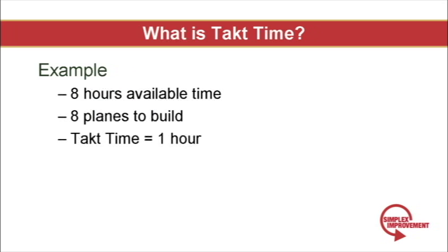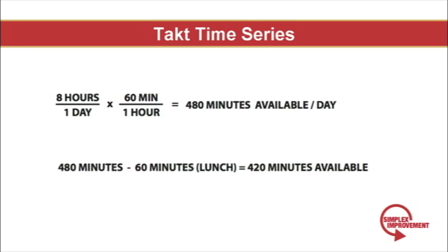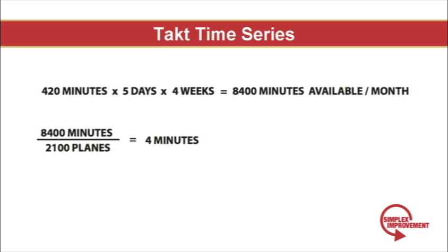Here's another example. We get a massive order of 2,100 planes and the customer says he needs them by next month. To make this easy, I'm going to convert 1 month into minutes. In any given day there are 8 hours, which works out to 480 minutes. I subtract off 60 minutes for lunches, breaks, and daily machine maintenance, leaving 420 minutes in a day for production. I multiply by 5 working days in a week and then by 4 weeks in a month. This gives me 8,400 total minutes of production in a month. I take 8,400 and divide by 2,100 planes and this tells me I have to complete a plane every 4 minutes to meet customer demand.